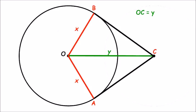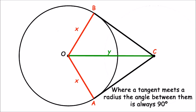We know that they are right angled triangles from the circle theorem which states that where a tangent meets a radius, the angle between them is always 90 degrees.